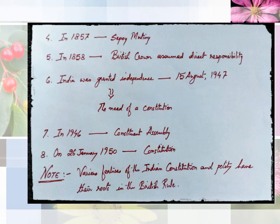Various features of the Indian constitution and polity have their roots in British rule, because the British ruled us for 200 years — a long period of time. It was necessary for India to take some rules and regulations from British rule, since those were familiar for 200 years and could not be removed in a short period of time. Here we have completed the brief introduction.